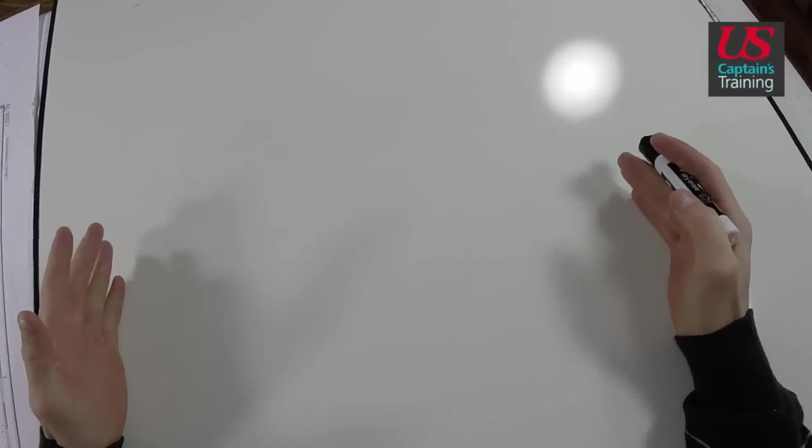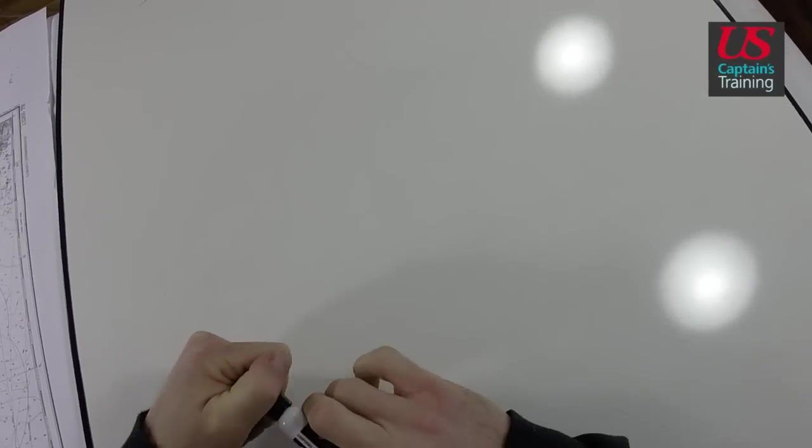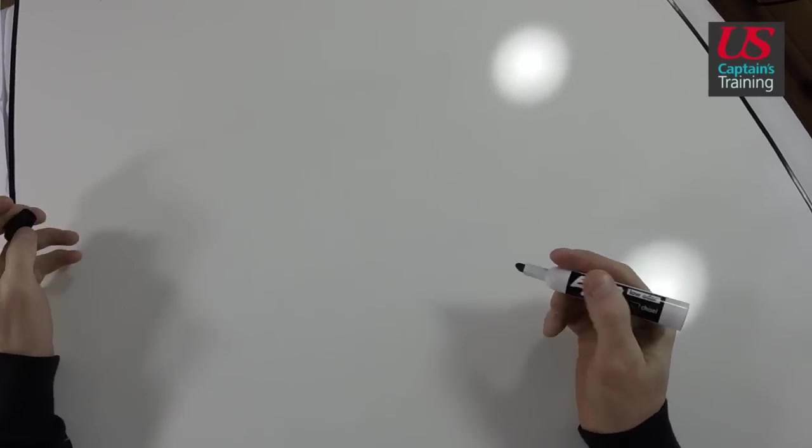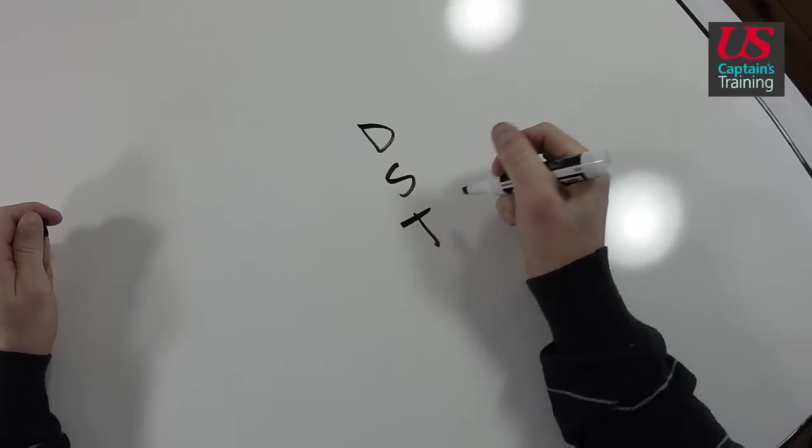These are the steps involved in solving an ETA, or estimated time of arrival problem. In all of these ETA problems, we use distance, speed, and time.